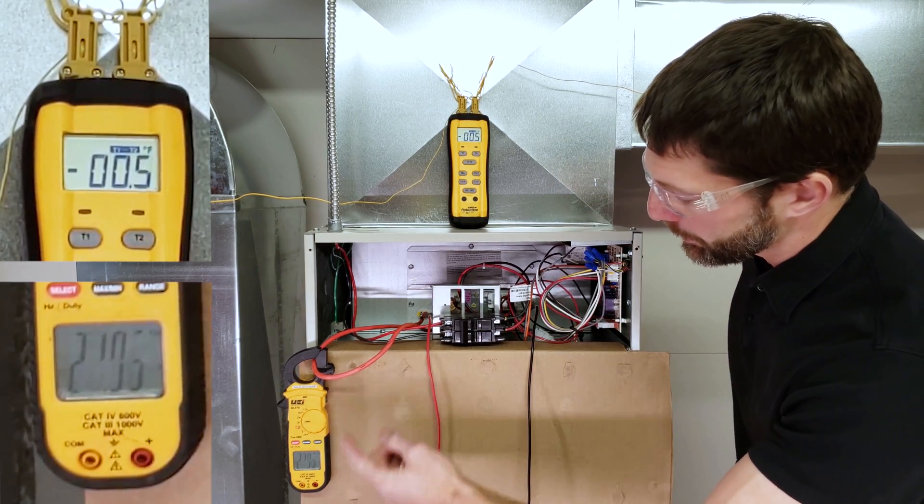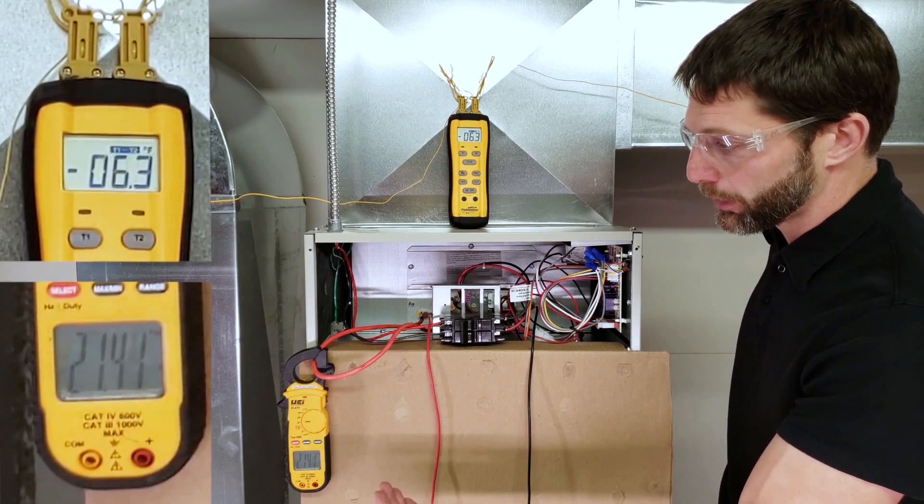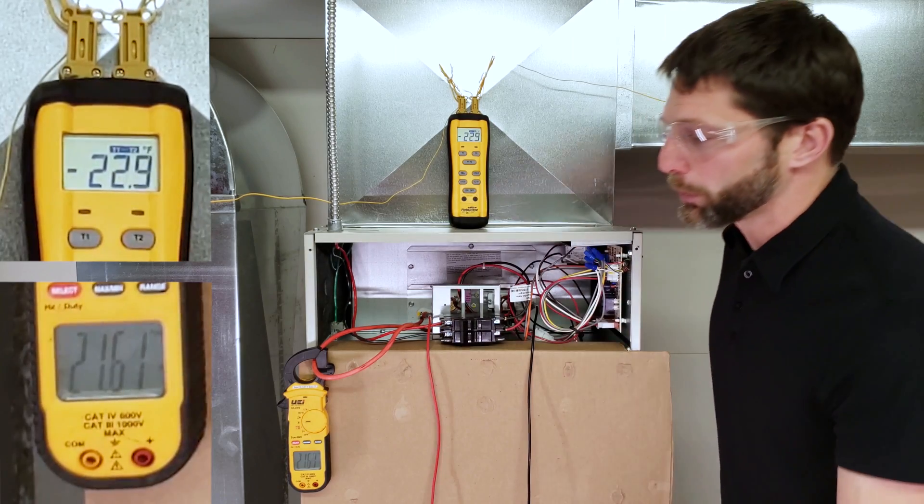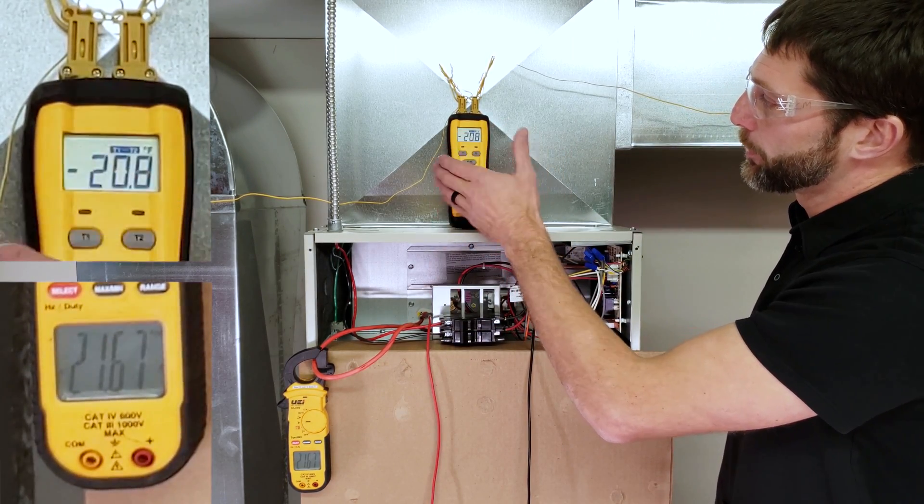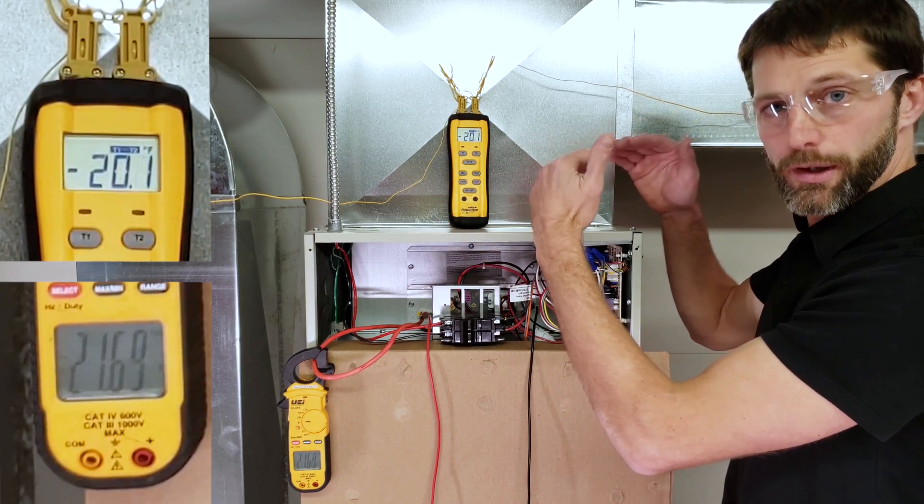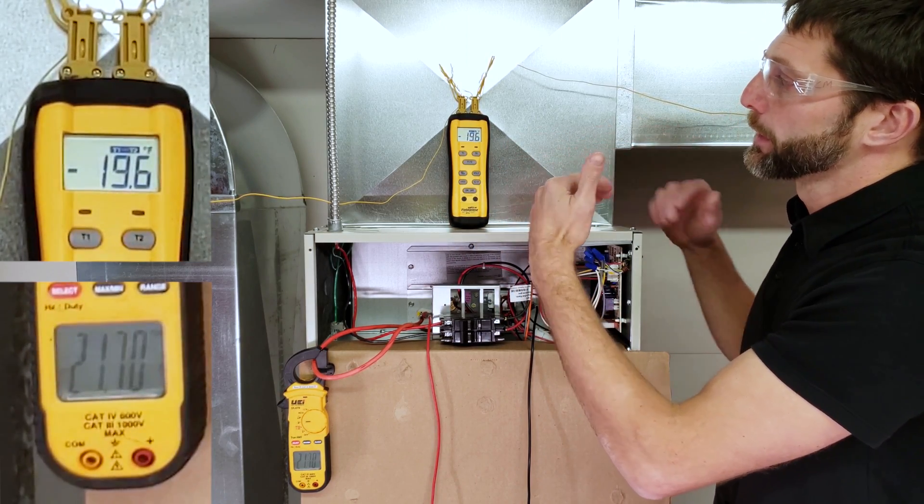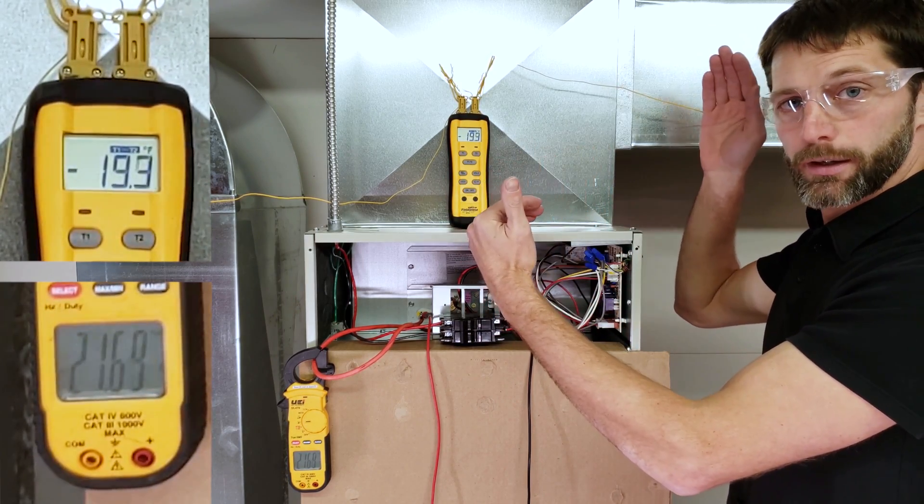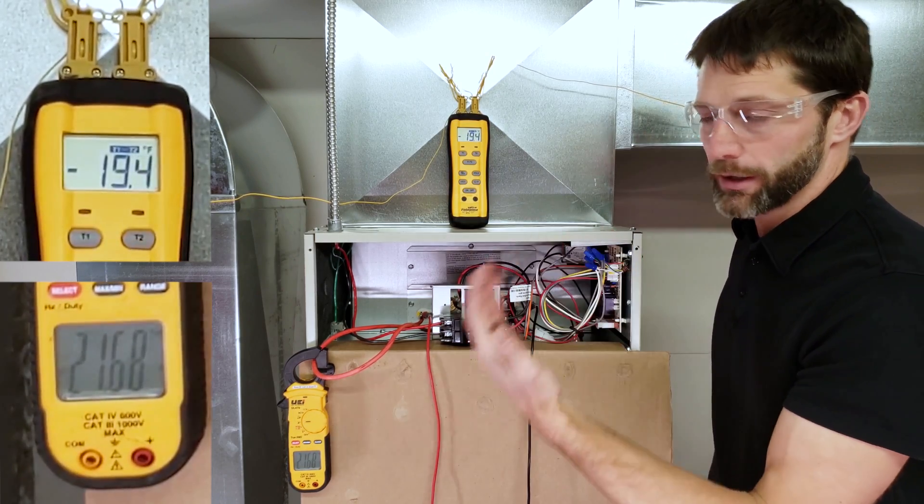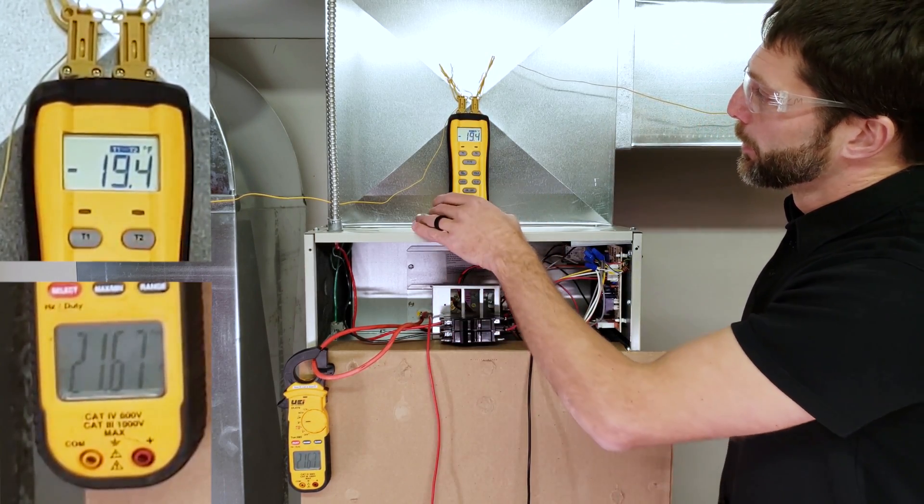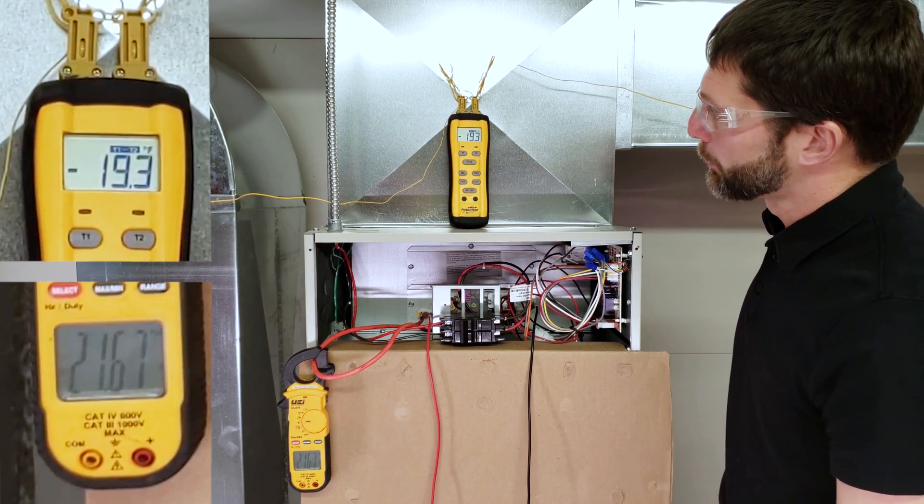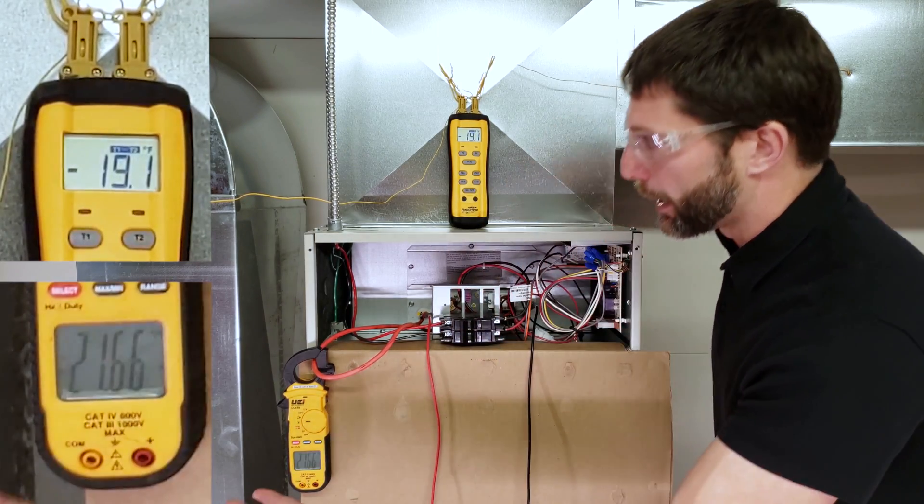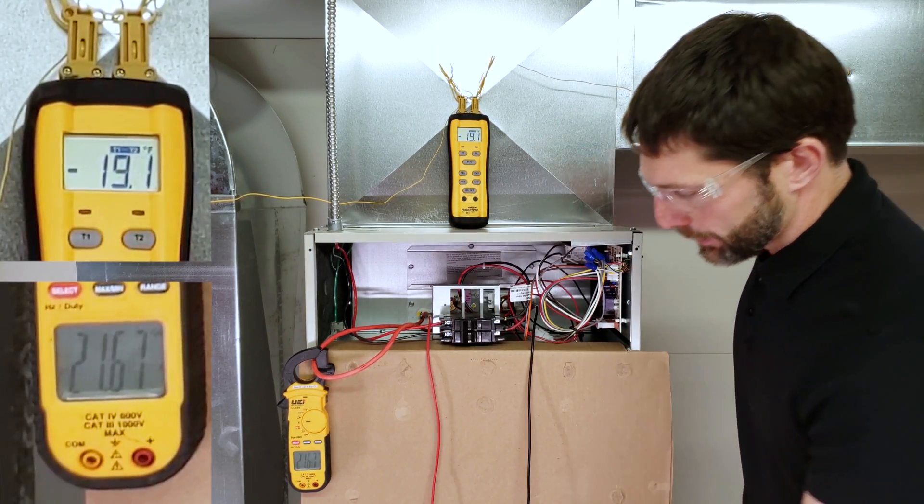The electric resistance is getting powered, then the blower motor turns on. Our amperage is right about 21.6 amps. We're looking for the temperature differential to settle into a constant. If it keeps rising, that means the blower motor speed isn't high enough or there's an airflow restriction. Right now we're reading about 19.3 degrees as a temperature differential and 21.65 amps. Let's check our voltage.